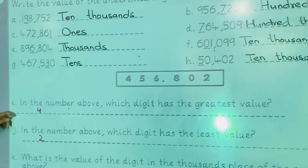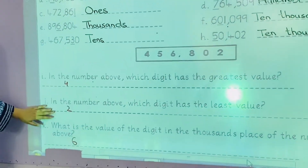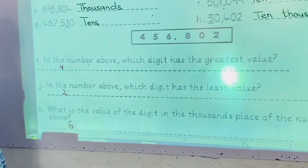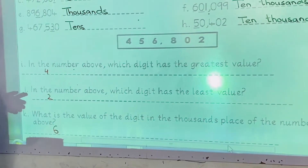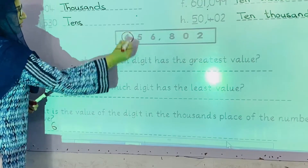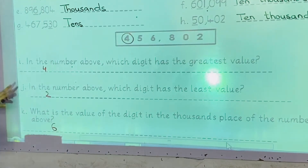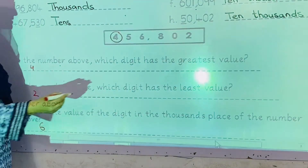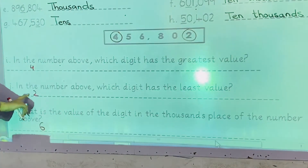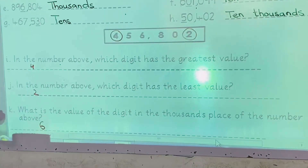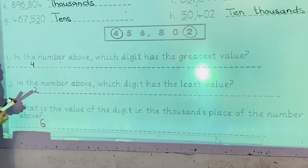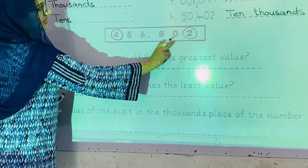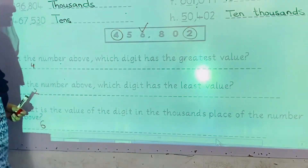Now we will move to part two. We have a number and these questions are asked. The first one is: in the number above, which digit has the greatest value? The greatest value digit is four. The second one: which digit has the least value? The digit with least value is two. The third one: what is the value of the digit in the thousands place of the number above? Counting ones, tens, hundreds, thousands — the digit in the thousands place is six.